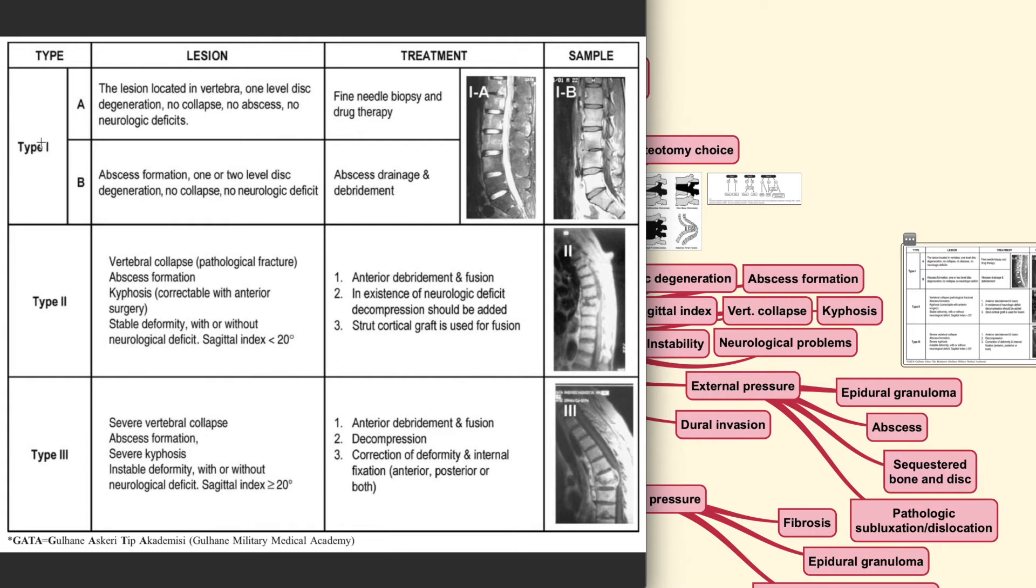They classify it to three different types, which is the type 1, type 2 and type 3. As you can see here that in the type 1A, once again, based on the seven different criteria, the type 1A is when the lesion is located in one vertebrae, one level disc degeneration, you cannot see any collapse or abscess or neurologic deficit. The treatment plan for this type of classification should only be fine needle biopsy along with drug therapy.